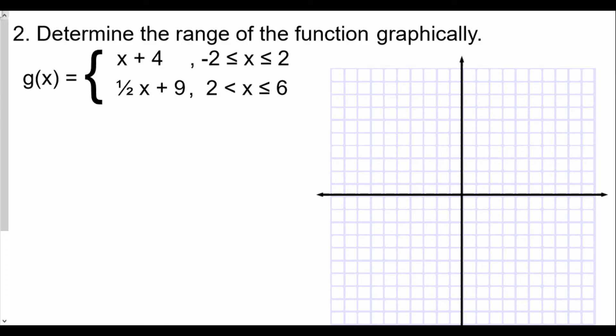To find this graphically, what we have to do is find the endpoints by evaluating the function at endpoints. We see that our domain for the first piece of our function, which is a linear function, is between x equals negative 2 to positive 2. So we want to find f of negative 2 and then f of positive 2.